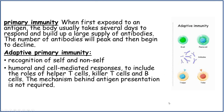Primary immunity: when first exposed to an antigen, the body usually takes several days to respond and build up a large supply of antibodies, and the number of antibodies will peak and then begin to decline. Adaptive primary immunity involves recognition of self and non-self, humoral and cell-mediated responses, to include the roles of helper T cells, killer T cells and B cells. The mechanism behind antigen presentation is not necessarily required.